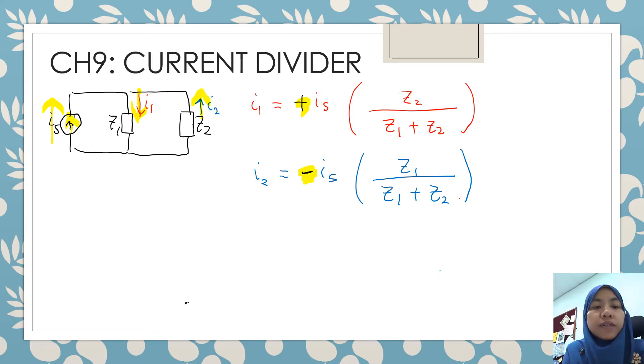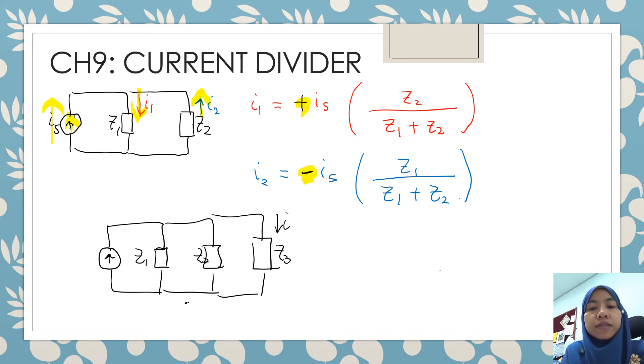But what if you have three elements in parallel? At least three. You can do the parallel rules. Let's say you're going to find the current flowing through impedance 3. Then maybe the current direction is going down. So your impedance 1 and impedance 2, you can do the parallel rules for impedance 1 and impedance 2.